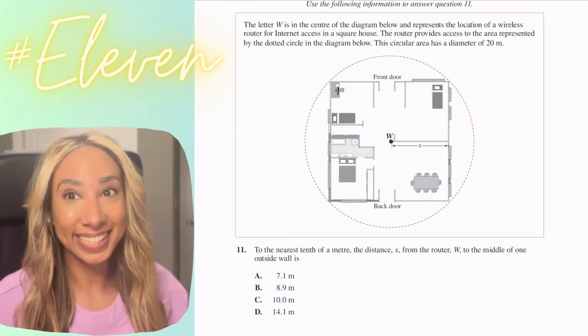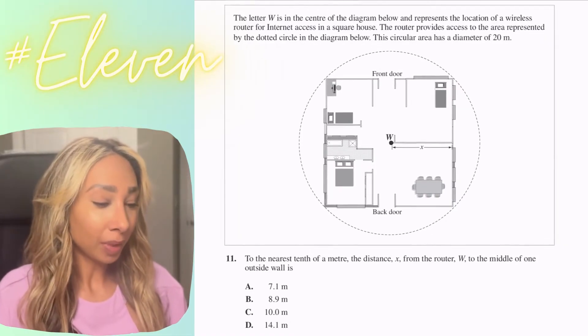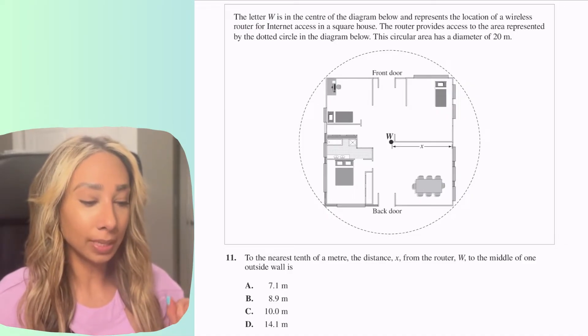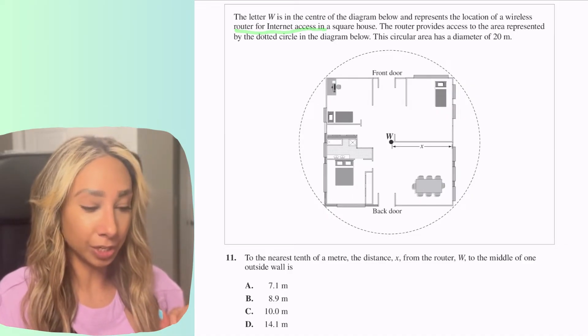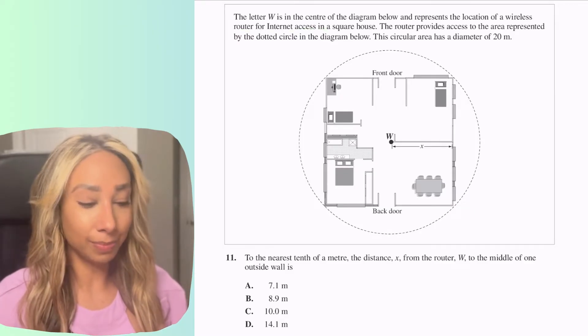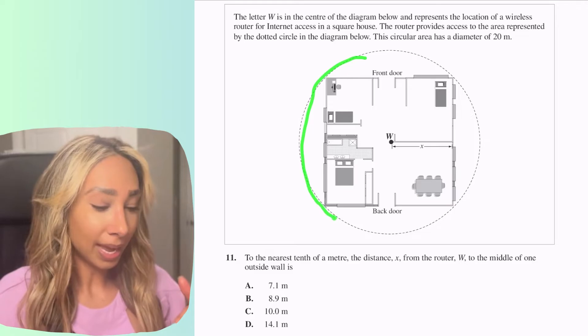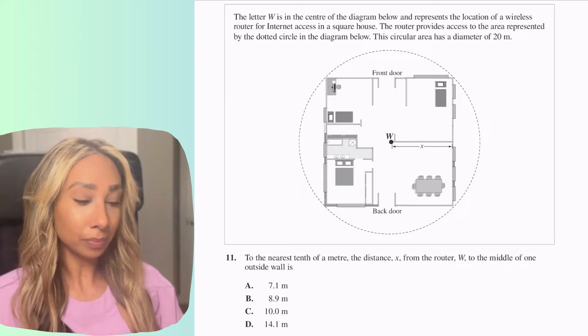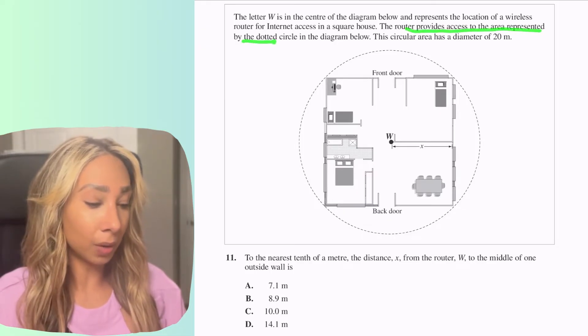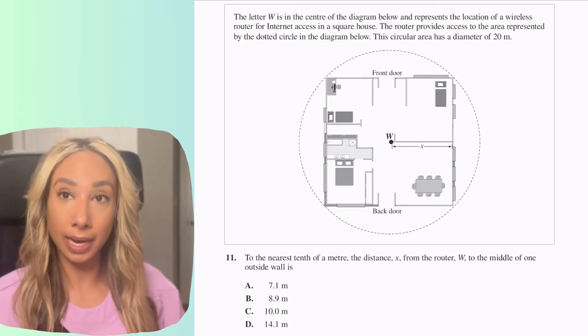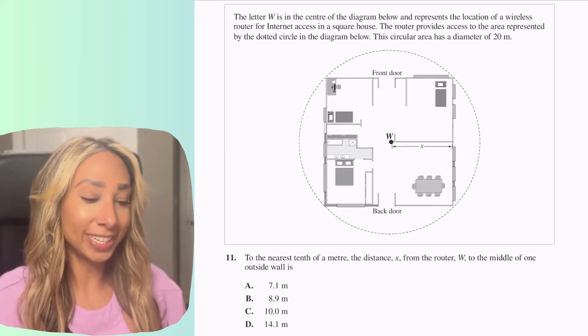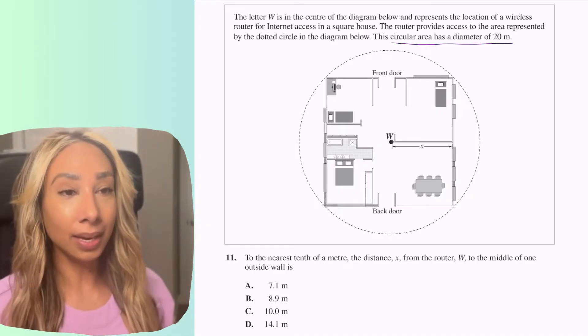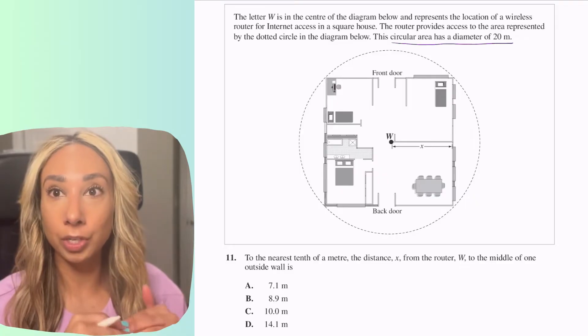Alright so let's take a look at question number 11 here. We've got the fact that the letter W is in the center of the diagram below and it represents the location of a wireless router for internet access. A couple of key things I'm noticing right away before I continue with the question is that we've got a circle and they've told us the room is going to be a square. The router provides access to the area represented by the dotted circle in the diagram below. Another key piece of information is that the circular area has a diameter of 20.